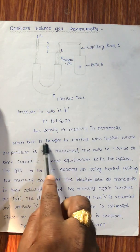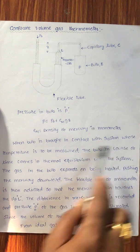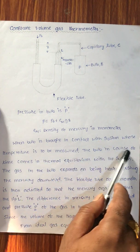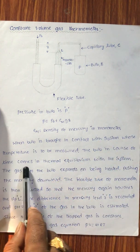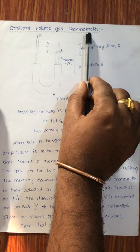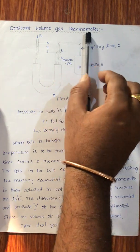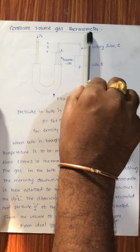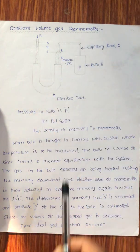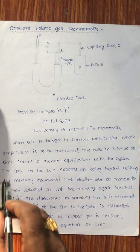Then this bulb and the system come to thermal equilibrium after some time. When the bulb is brought in contact with the system, the bulb in course of time comes to thermal equilibrium with the system. These two exchange heat and they come to the same temperature — that is thermal equilibrium.